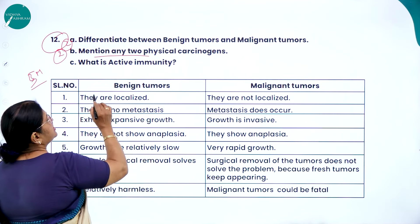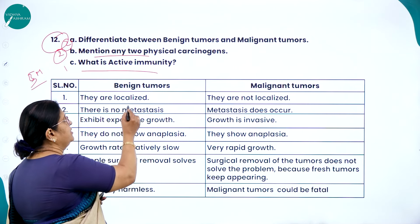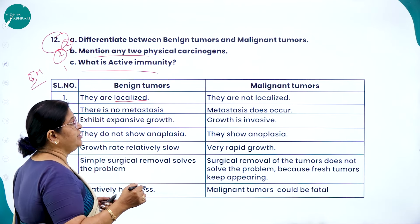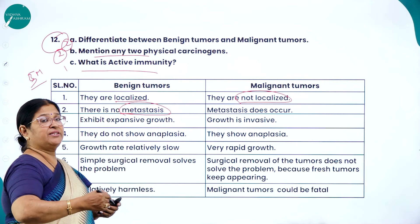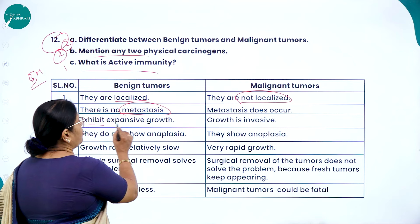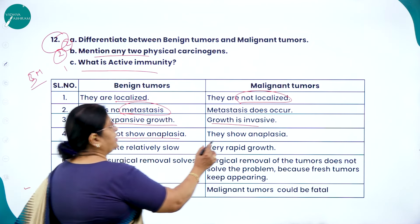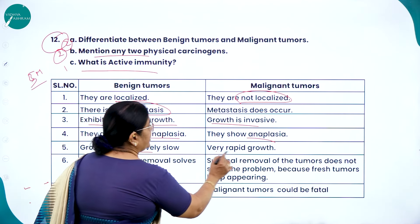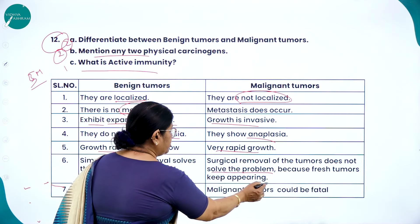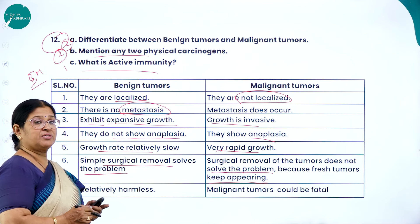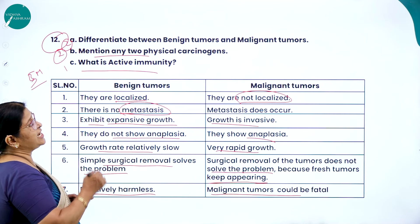Differentiate between benign tumor and malignant tumor. Benign tumors are localized — they don't spread from one place to another; there is no metastasis and they do not invade other areas. Malignant tumors are not localized — they spread from one place to another; metastasis does occur and growth is invasive. Benign tumors do not show anaplasia (formation of abnormal cells); malignant tumors do show anaplasia. Growth rate is relatively slow in benign tumors but very rapid in malignant tumors. Benign tumors are relatively harmless; malignant tumors could be fatal.